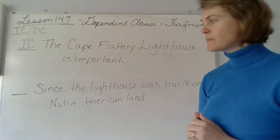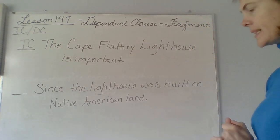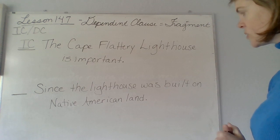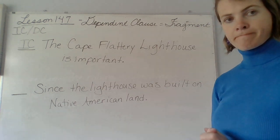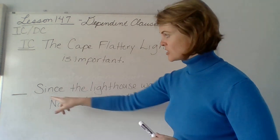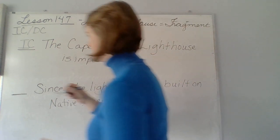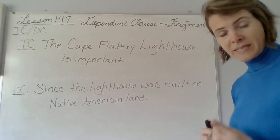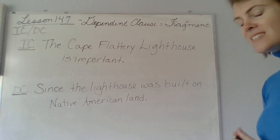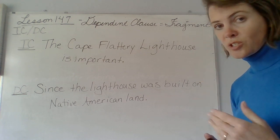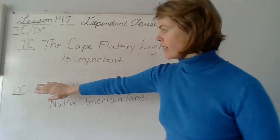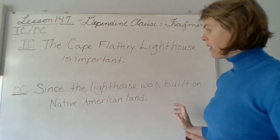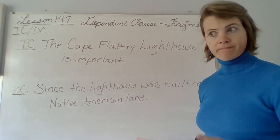This sentence says: since the lighthouse was built on Native American land. Independent? Dependent. Since the lighthouse was built on Native American land — that is dependent, because notice it has a joining word. Since it's a dependent clause, we have to fix it so that it can become independent. To make it independent, you could do two different things. The simplest thing to do would be to take off the joining word. If I take off the word 'since,' I am left with: the lighthouse was built on Native American land. That's a complete thought.